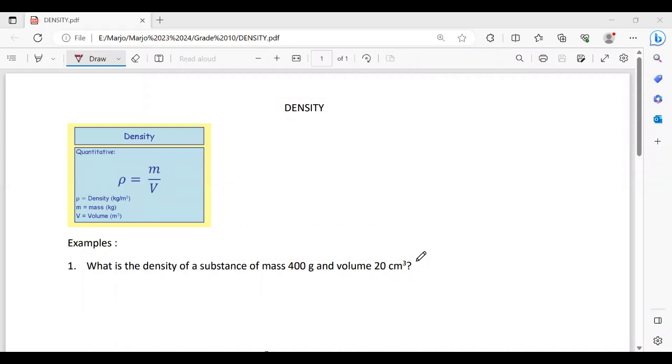Hi students, now we are going to learn again about density. This lesson is for those students of grade 10. Let's start. Density formula: ρ = m/v, where ρ is density with unit kilograms over meter cube, m is mass with unit kg, and v is volume with unit meter cube.